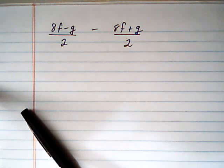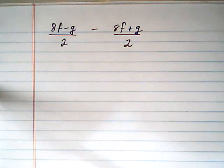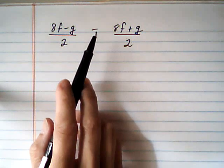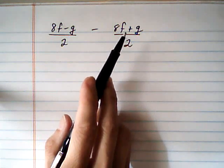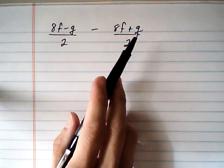We're going to subtract a rational expression that has the same denominators. The first thing I notice here is that it's a subtraction and I've got two terms in the second numerator.